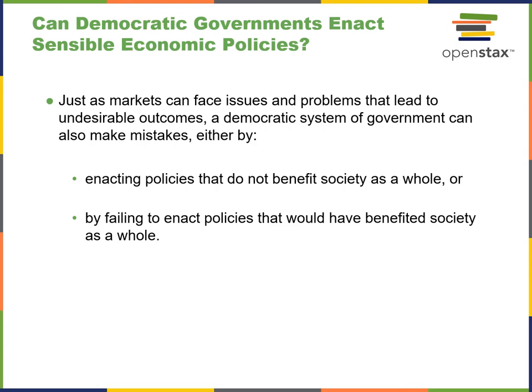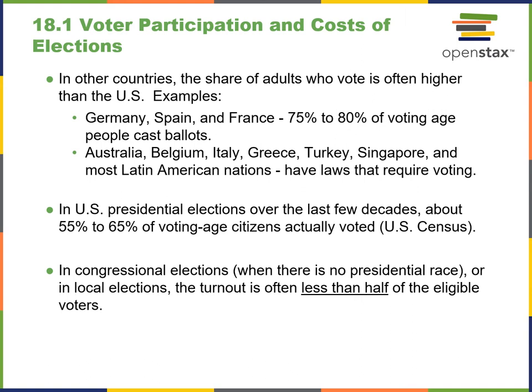Voter participation and the cost of elections. In other countries, people tend to vote more than in the U.S. Some countries have laws that require voting — Germany, Spain, France, Australia, Belgium, Italy, Turkey, and others. But in the U.S., we're only talking about 55 to 65 percent of voting-age citizens actually voting. In congressional districts where there was no presidential race, turnout is often less than half of eligible voters.